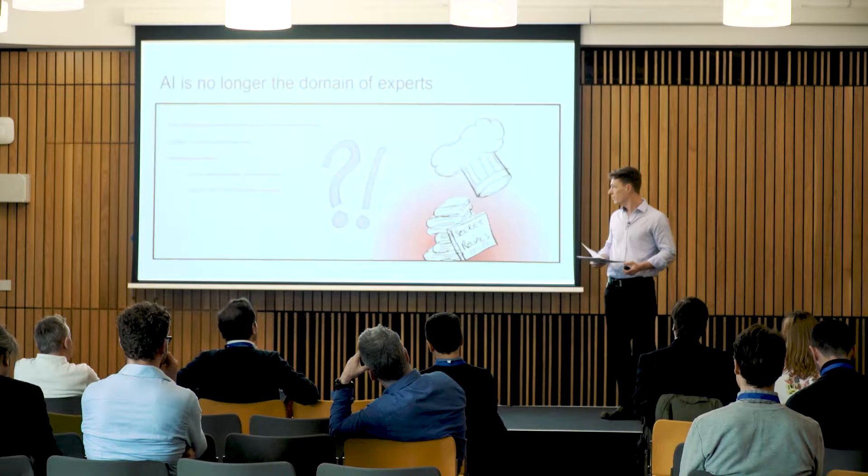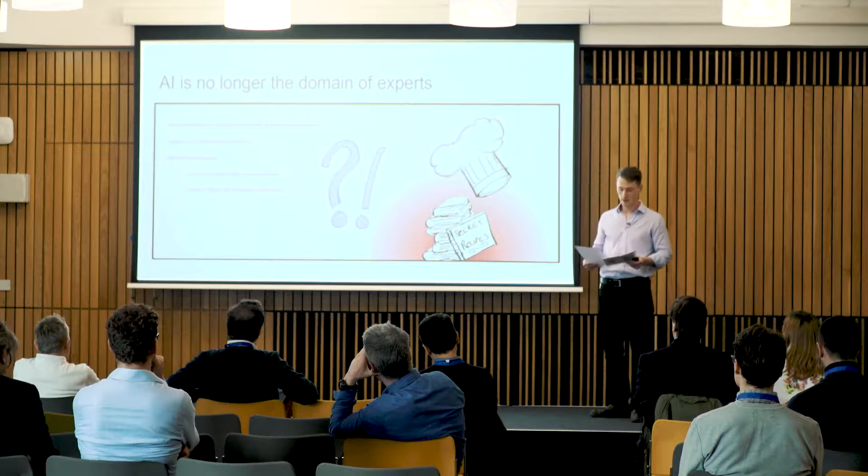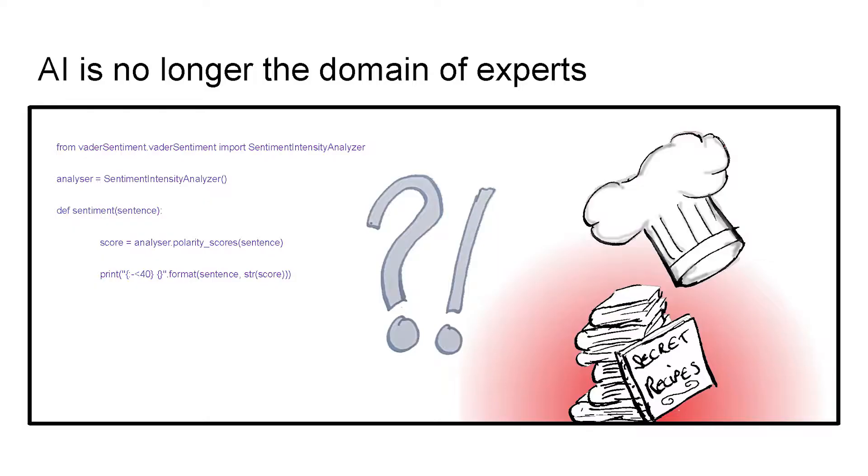So in the old days there was no choice how you did these things. It was pretty much the domain of experts and if you wanted to do some AI you brought in the AI expert and they performed some secret incantations and decoded the secret recipes in much the same way that a celebrity chef does and that was how it was done because there was no alternative. And this whole arrangement is actually very fragile. It takes a lot of resources to actually get this to work.